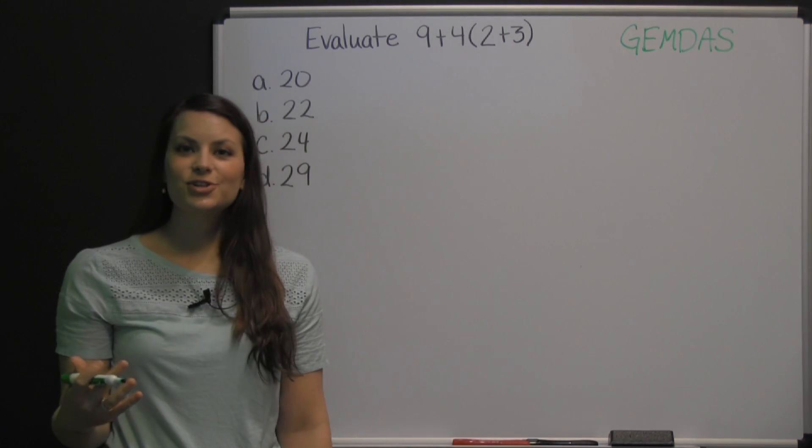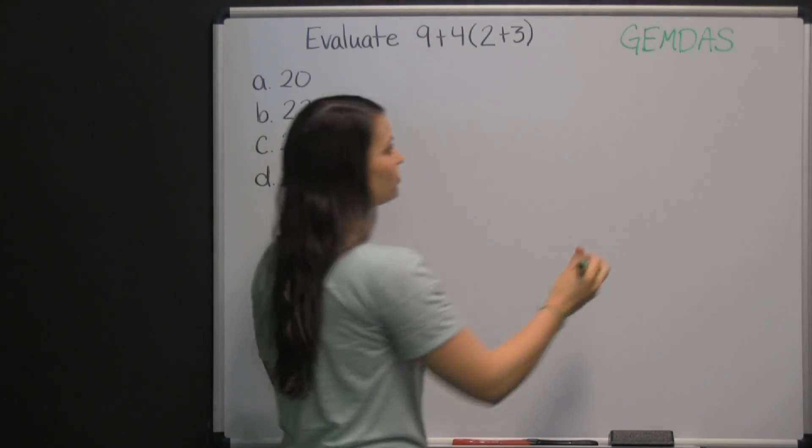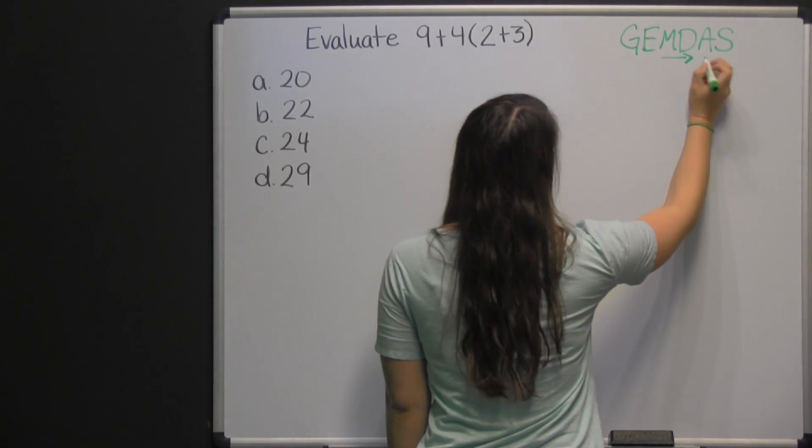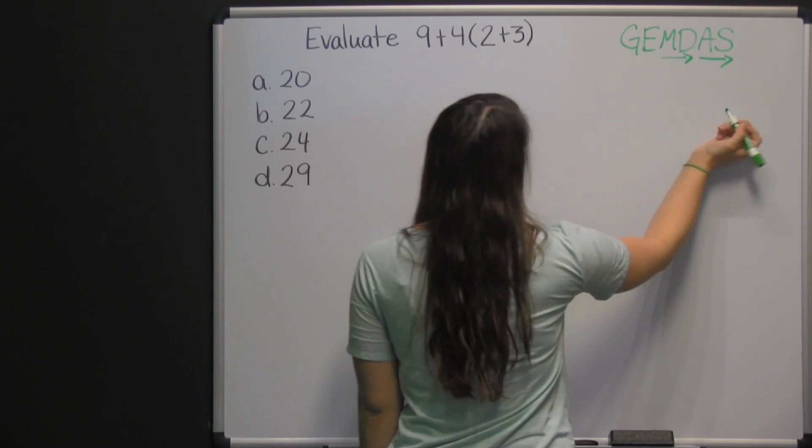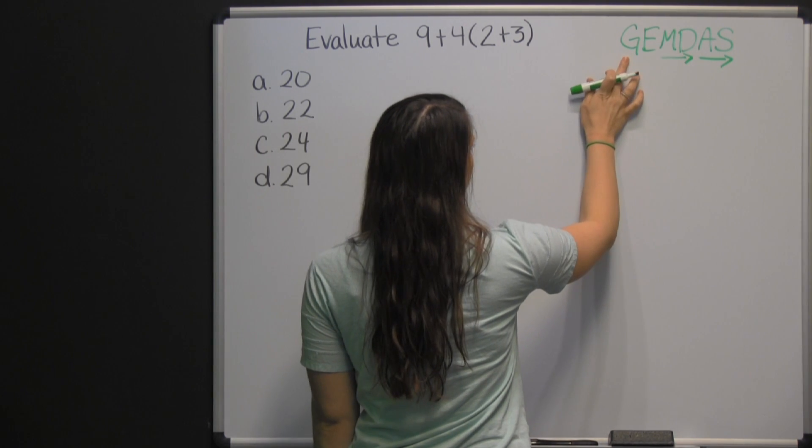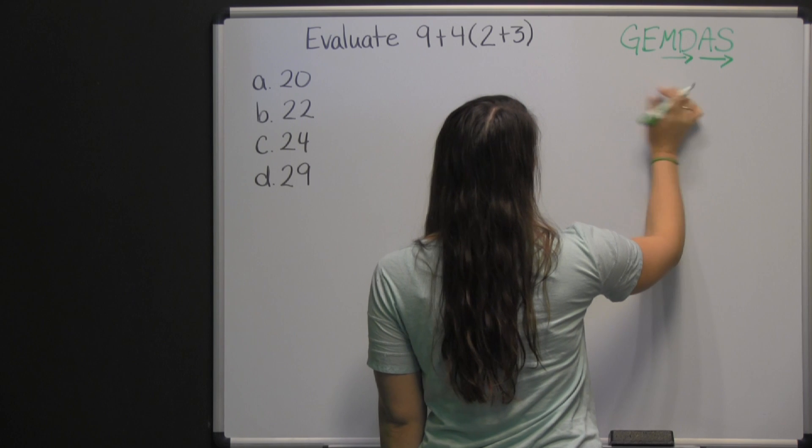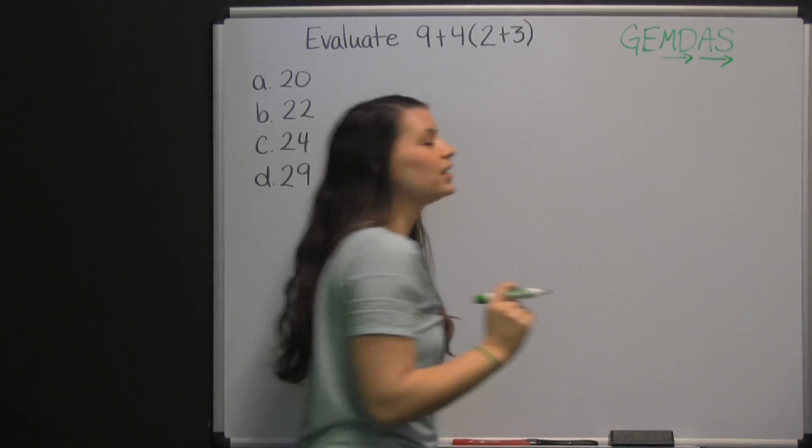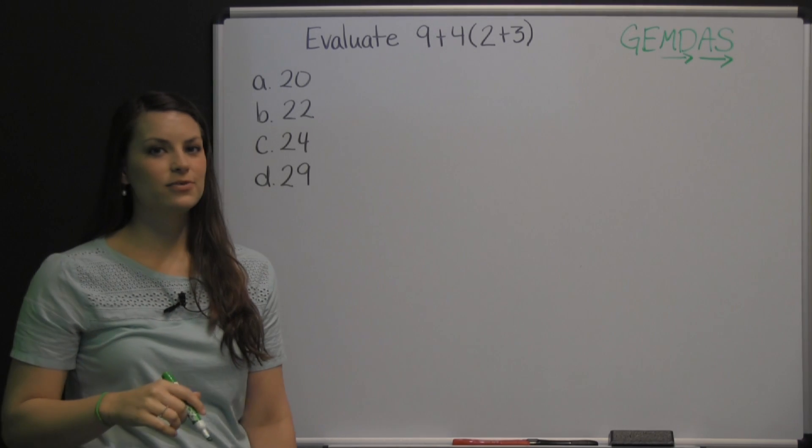With the multiplication and division, you'll want to work those just from left to right depending on which one comes first. Same with addition and subtraction. But you'll always do your grouping symbols first, followed by your exponents, then any multiplication division left to right, and finally addition and subtraction from left to right.